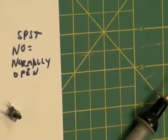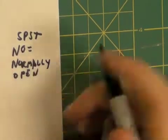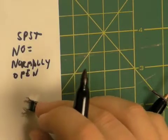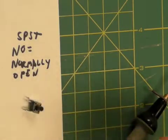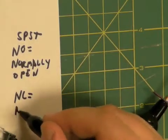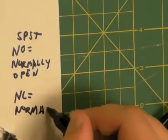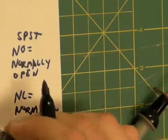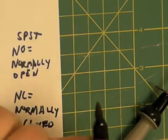Now, if when I pushed down on it, it opened it, and when I released it, it was closed, it'd be called NC, or normally closed. So that's about the simplest type of switch you can get.